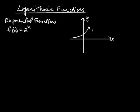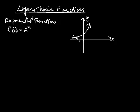Looking at the graph, we can see that this function is one-to-one. How do we know that? Because this function passes the horizontal line test — no horizontal line crosses more than once. The function is one-to-one, and that implies that this function has an inverse.